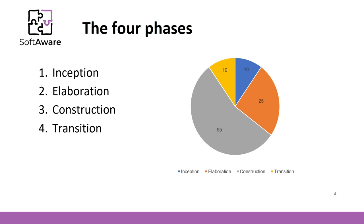Now let's look at the proportions of each phase. Around 10% of project time is dedicated to the inception phase, around 25% to the elaboration phase, the biggest construction phase takes around 55% of the project time, and finally the transition phase takes around 10% of the project time.